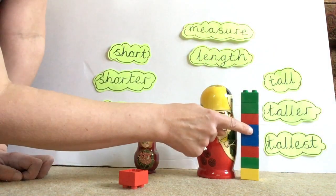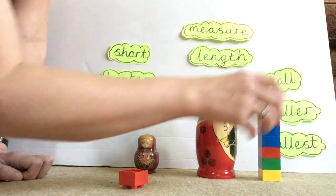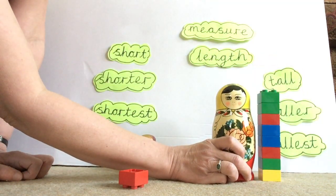Let's count together. One, two, three, four, five, six, seven, eight. So this Russian doll is eight bricks tall.